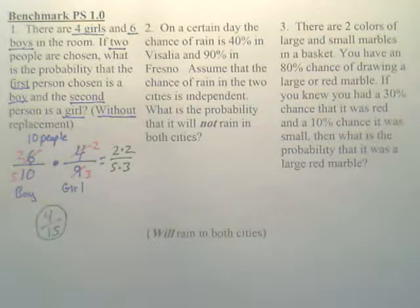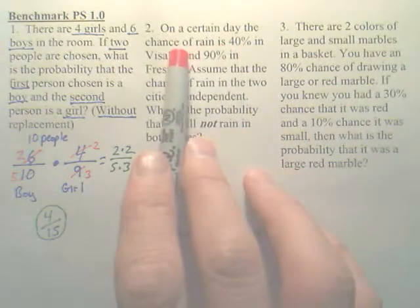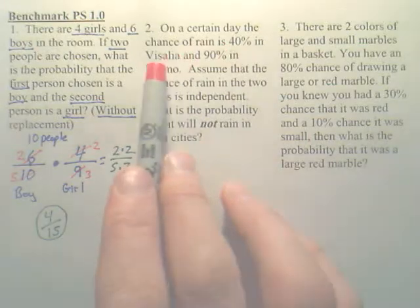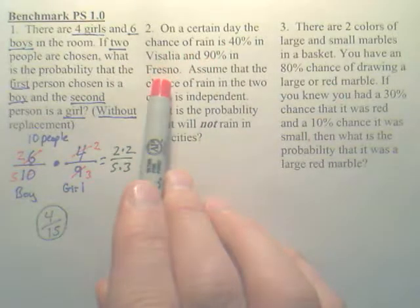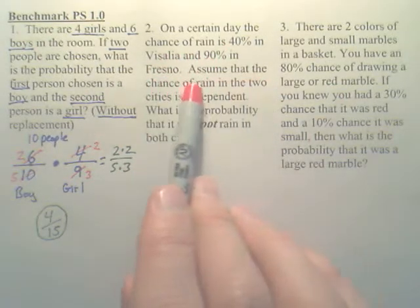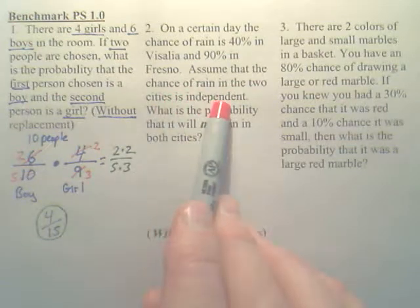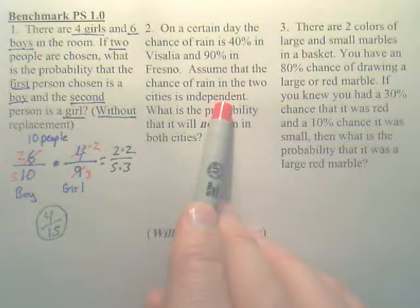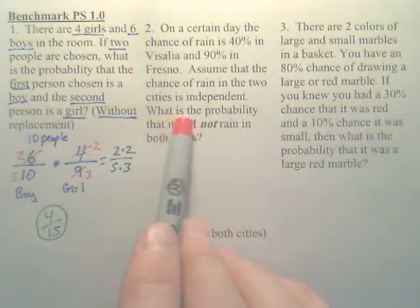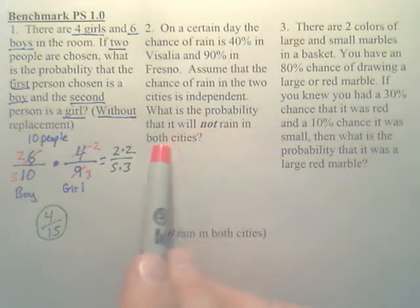Number two. On a certain day, the chance of rain is forty percent in Visalia, but ninety percent in Fresno. Assume that the chance of rain in the two cities are independent. That's important.